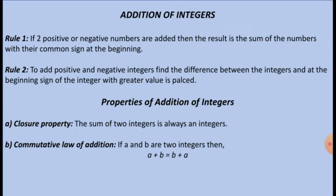There are some rules and laws which are followed by integers, and when working with integers we must know these rules. Rule number 1: if two positive or two negative integers are added, the result is the sum of the numbers with their common sign placed at the beginning.